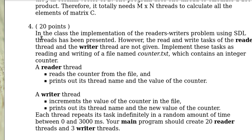This video shows you how to implement the reader-writers problem discussed in class. To simulate the reading and writing activities, we read and write to a file named counter.txt which contains an integer counter. A reader thread reads the counter from the file and prints out its thread name and the value of the counter. A writer thread increments the value of the counter in the file and prints out its thread name and the new value of the counter. Each thread repeats its task indefinitely, waiting a random amount of time between 0 and 3,000 milliseconds.